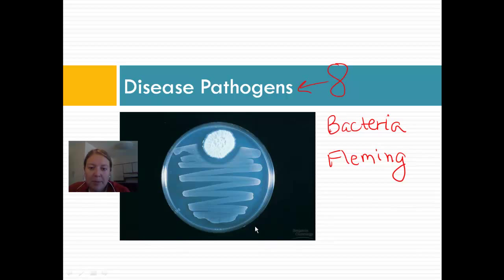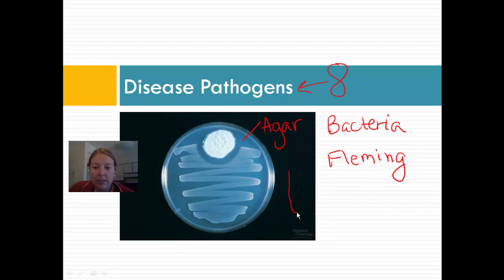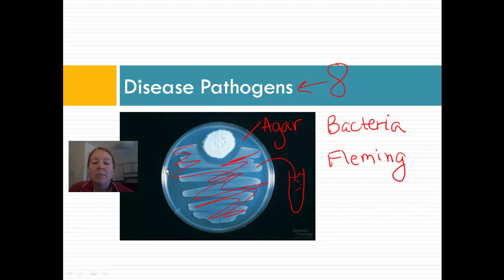So what he did was he had this petri dish covered in a gel called agar. Agar is a really good growth medium to grow bacteria on — there are nutrients there, it's just a great place where bacteria want to grow and grow quickly. So he had this agar sitting out with a sample of bacteria and he spread it all out. He's what's called streaking the plate, streaking the petri dish. But it must have been contaminated and he left it open overnight or a couple of days.